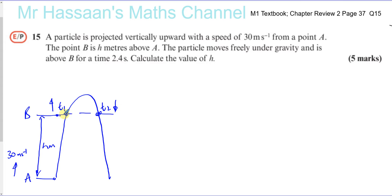And the difference between those two times is 2.4 seconds. It spends 2.4 seconds above the level of B. And with this information, we've got to find the value of H, how far B is above A. Now there's two methods we could use.